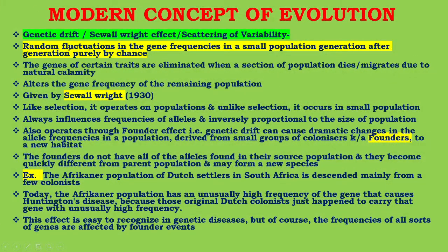Genetic drift, or the Sewall Wright effect, or scattering of variability: random fluctuation in gene frequencies in a small population, generation after generation, purely by chance, is known as genetic drift. The genes of certain traits are eliminated when a section of the population dies or migrates due to natural calamity — genetic drift alters the gene frequency of the remaining population. This concept was given by Sewall Wright in 1930, and is therefore also known as the Sewall Wright effect.